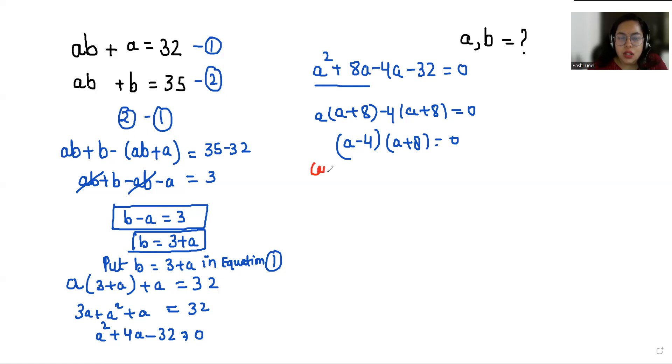Now case first: when A minus 4 equals 0, the value of A is 4. Case second: when A plus 8 equals 0, the value of A is negative 8.